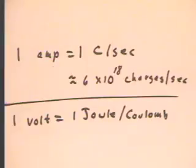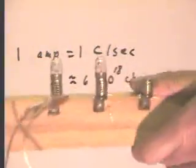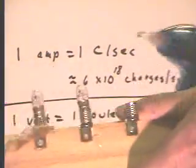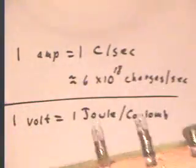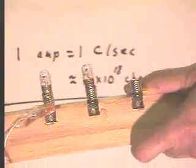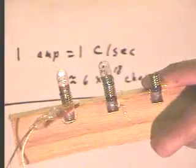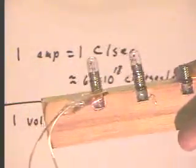That means that if I'm cranking one coulomb of electrons past a point in this circuit every second, and actually here, I'm probably cranking something like about a tenth of a coulomb through any given point in a second.